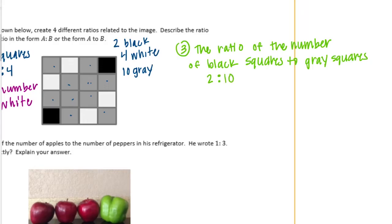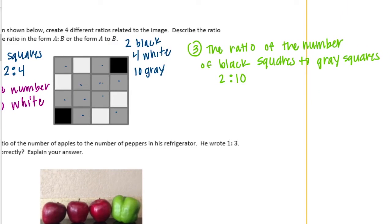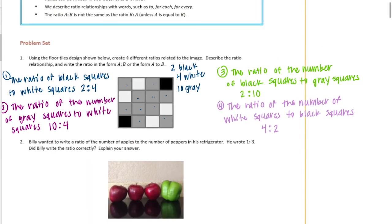And our last one, let's do, let's just flip the black and white ones and do the ratio of white squares to black squares. So white squares is four and black squares is two. So there's four different examples for you.